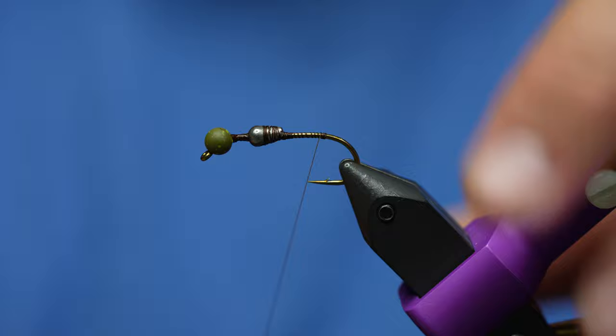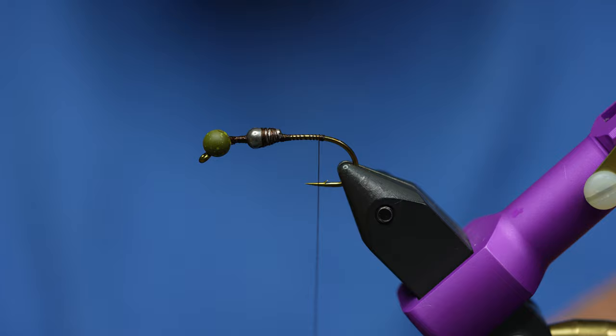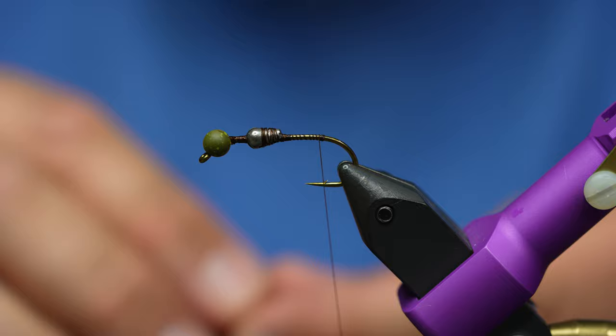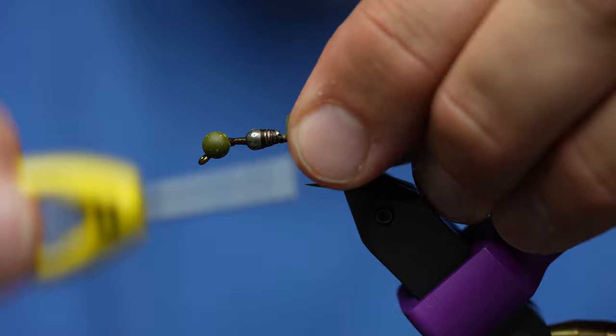We're going to take some of these silicone flutter legs in olive or whatever color. There are a ton of different leg options for this - you can just use whatever you like. I want to take basically half the tab of the legs. I have a section right there I'm going to trim off, and all I'm going to do is tie that in right behind this second body weight.